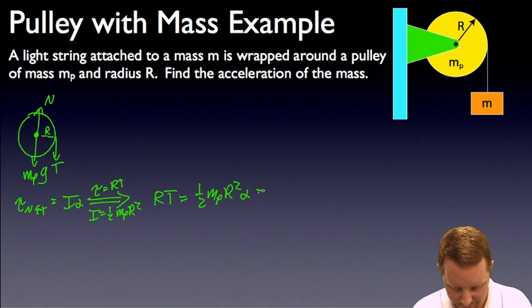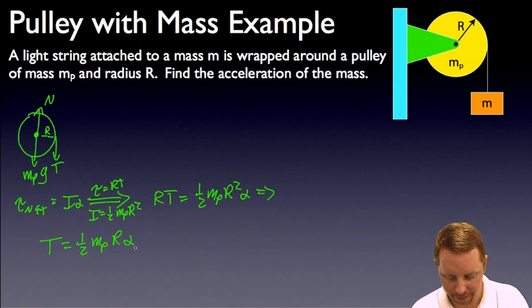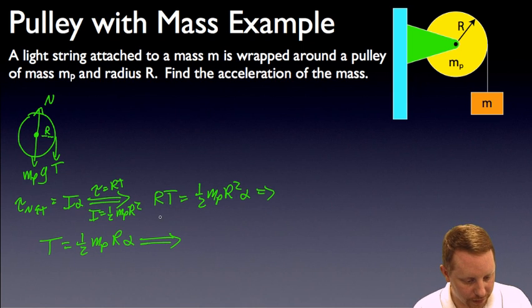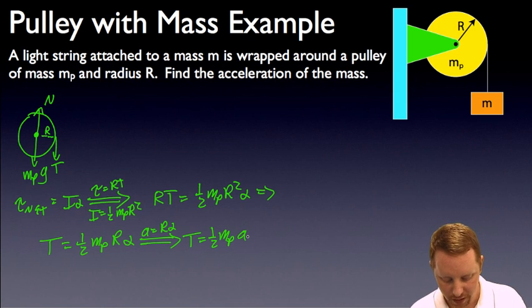Or if I solve for the tension, that's just going to be, I'll divide r from both sides and I will get one half mp r alpha. But I'm trying to find a linear acceleration, not an angular acceleration. So I can use the translation that alpha is going to be a over r, or a equals r alpha. And write this as my tension equal to one half mp r alpha, I just replaced with linear acceleration. All right, that looks like about as far as I can go with our pulley. Let's go look at the free body diagram for our mass.